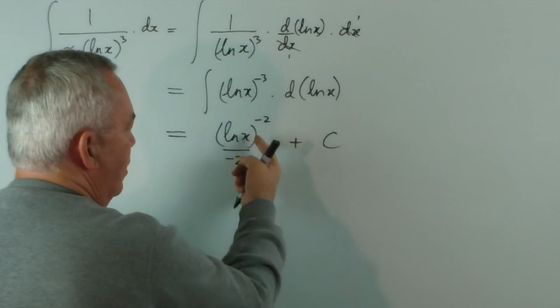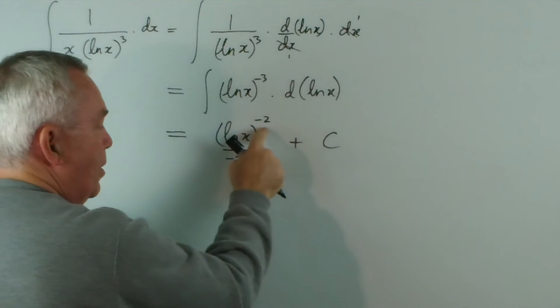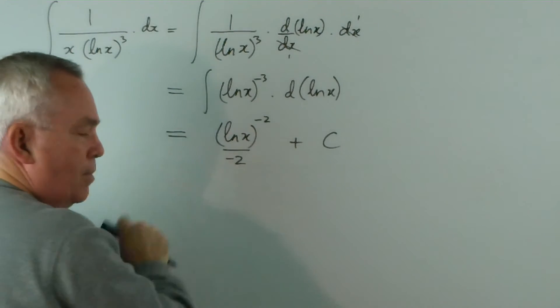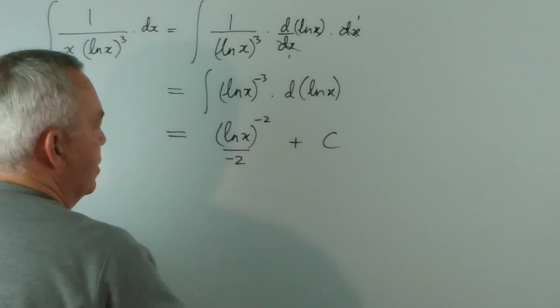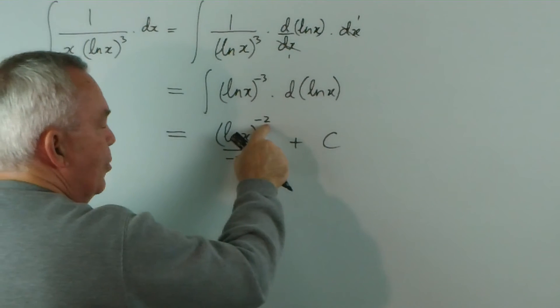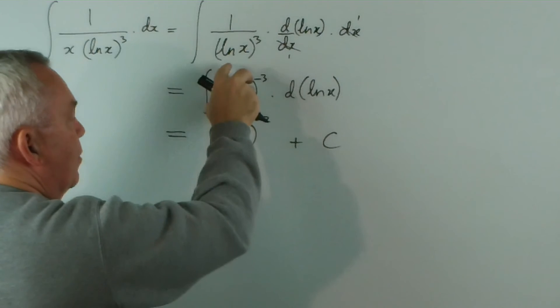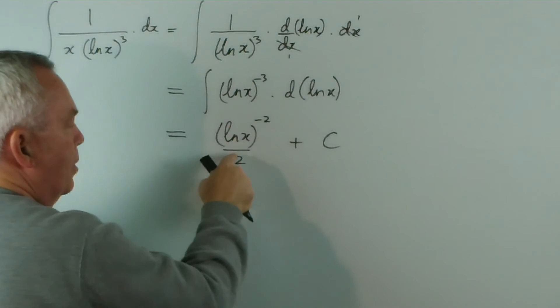Because if we want to work backwards and take the derivative, the negative 2 would come down and divide with that. So we don't change, we just have a constant of 1 out the front. And this would drop by 1 to negative 3. So that is, in fact, the integral of this, or this is the derivative of that.